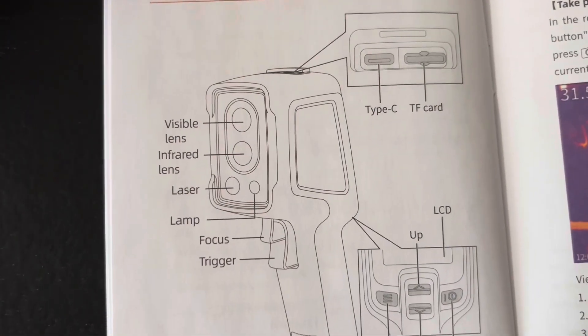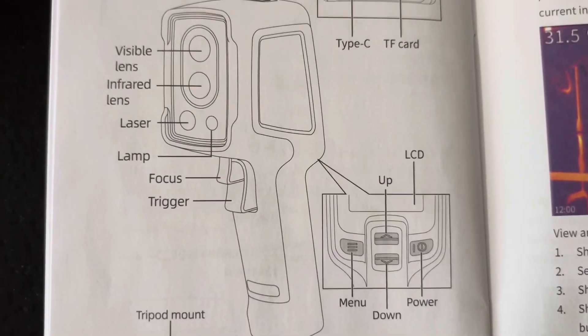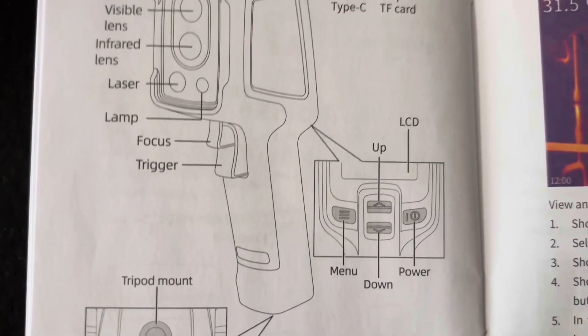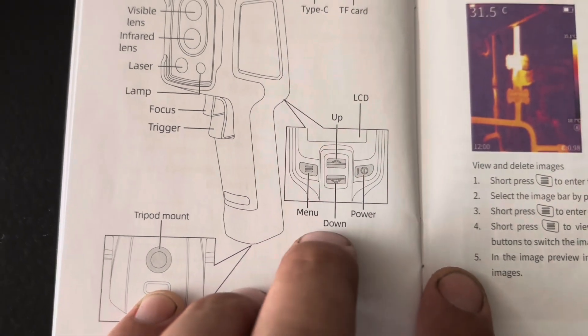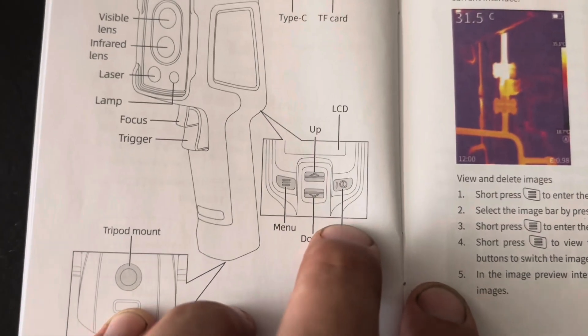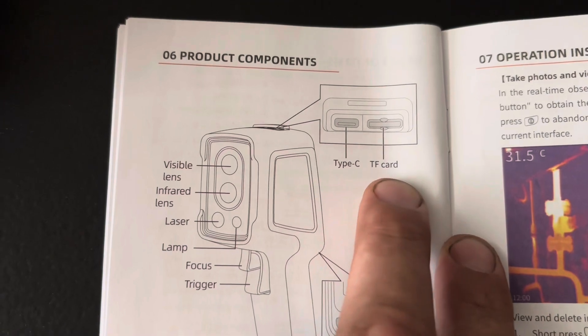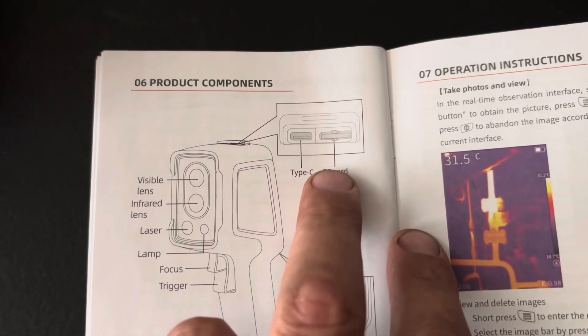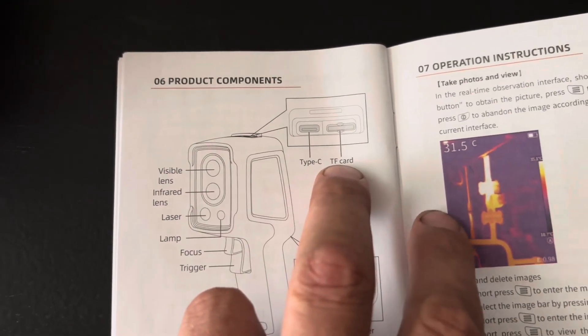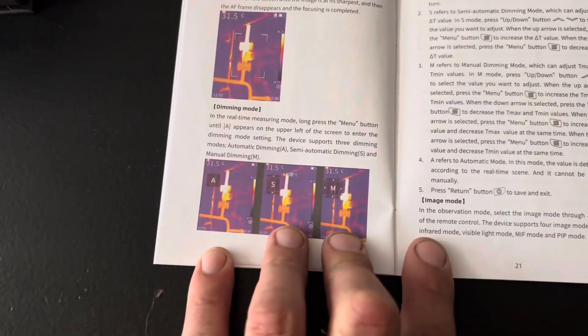There's the PC 230 logo, and on the other side you can see the lenses. We have a visible lens, an infrared lens, a laser lamp, two triggers - one is a focus trigger, one is a picture taking trigger - and then the buttons: up and down button, LCD screen, and the menu button. Up top we have the Type-C charging and the TF card, which is basically a memory card that comes pre-installed. You can take it out after you take pictures and load them onto your computer for data sharing.